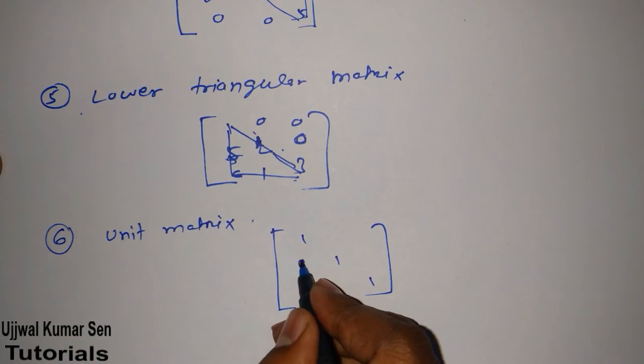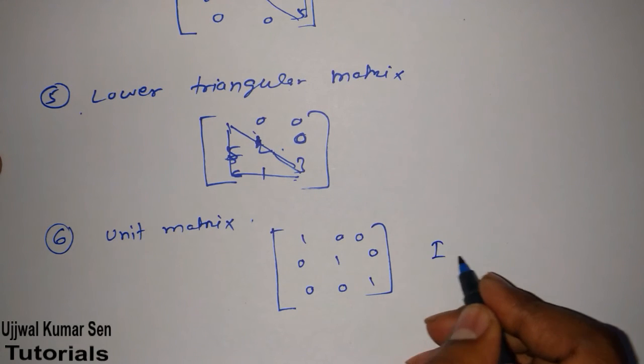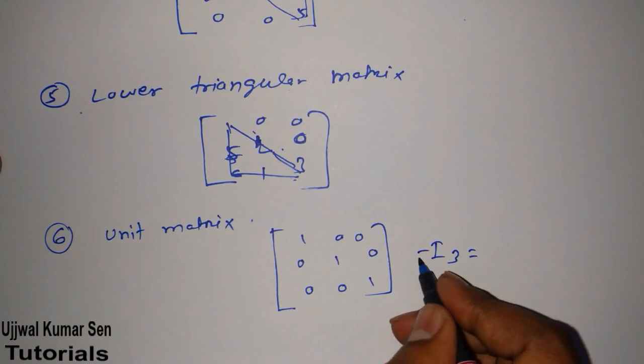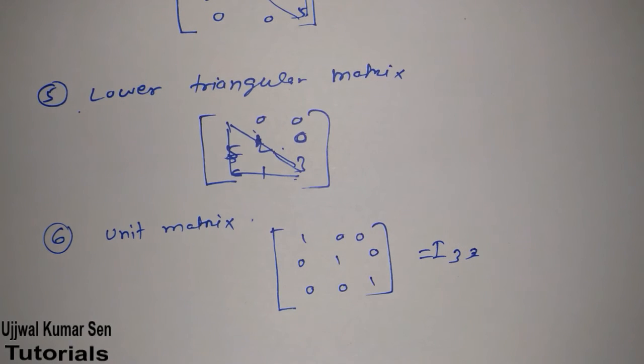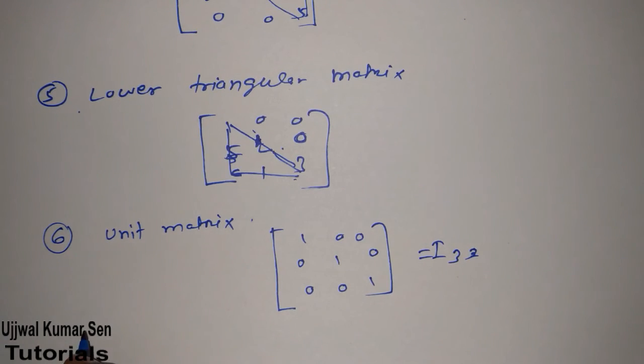Yeah, I must go for unit matrix. What is basically unit matrix? If all diagonals are 1 1 1, and this is also known as I3, so this is known as unit matrix.